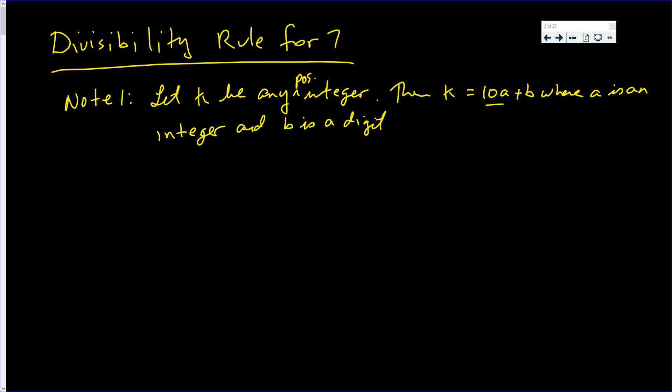So now, 7 divides k if and only if 7 divides k, and I'm calling k 10a plus b. Now you can add or subtract any multiple of 7, and it won't change whether or not 7 divides this number.